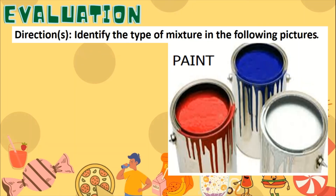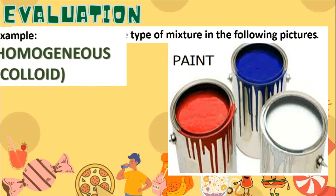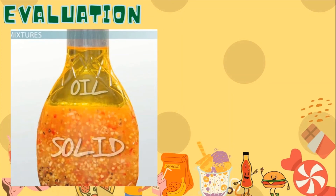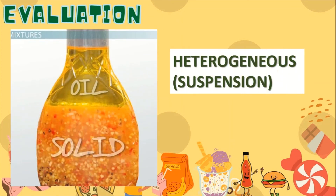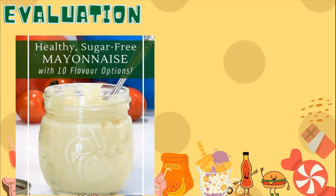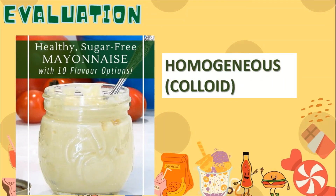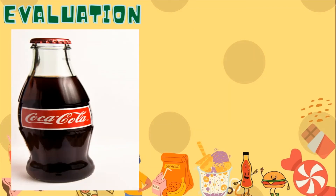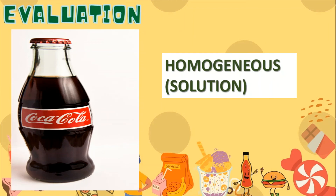Now let's check if you understood our lesson. Identify the type of mixture in the following pictures. Paint — what kind of mixture is this? Homogeneous colloid. How about this one? Heterogeneous suspension. Can you guess this one — mayonnaise? Homogeneous colloid. And this one? Homogeneous solution.